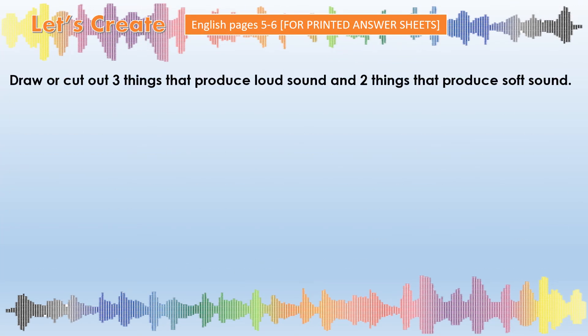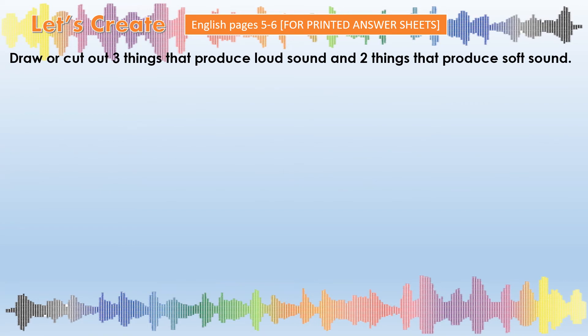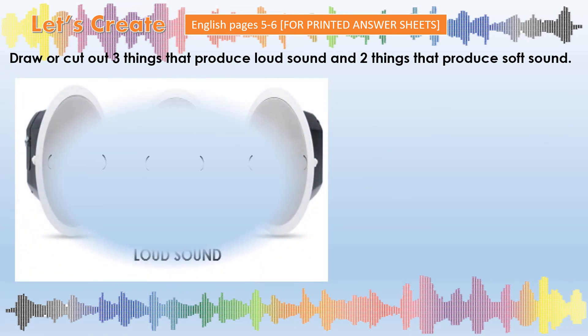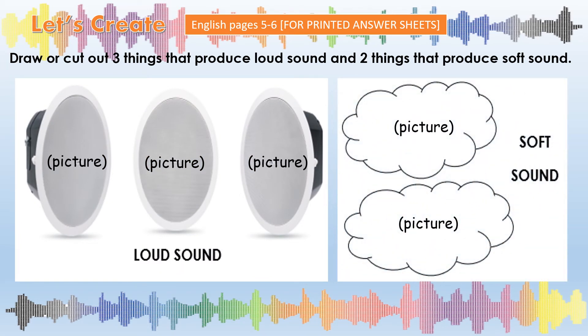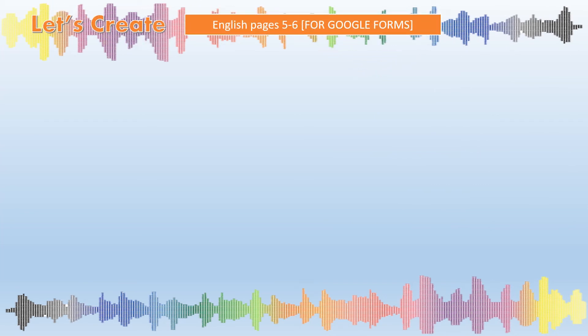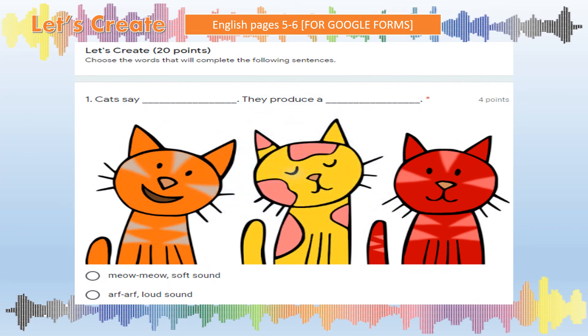For the last part of our lesson, draw or cut out three things that produce loud sound, and two things that produce soft sound. For those who will use Google Forms, choose the words that will complete the following sentences on the Let's Create part.